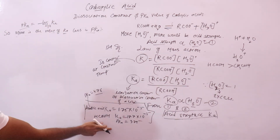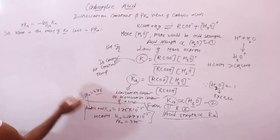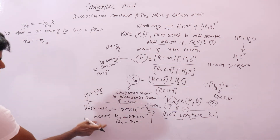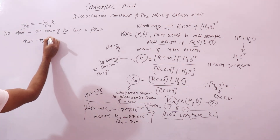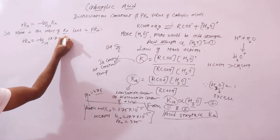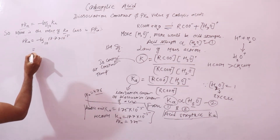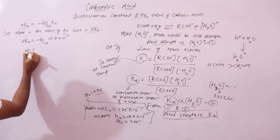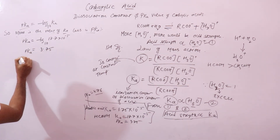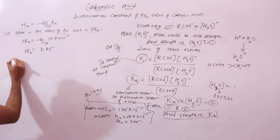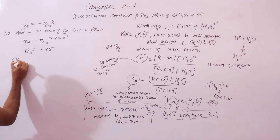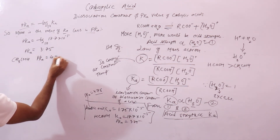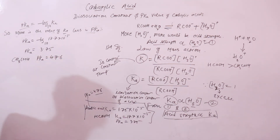To get the pKa value, we put the Ka value into the relation pKa = −log₁₀(Ka). For formic acid, Ka = 1.77 × 10⁻⁴; calculating this gives pKa = 3.75. For acetic acid, pKa = 4.76, and we know it is a weaker acid.